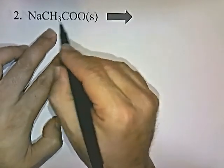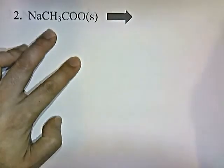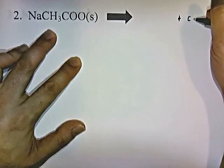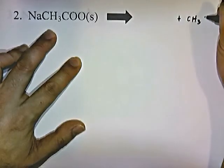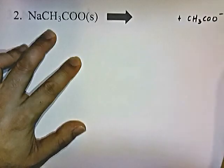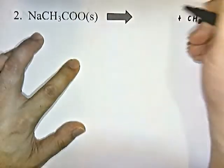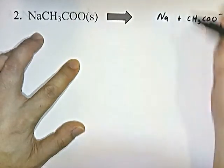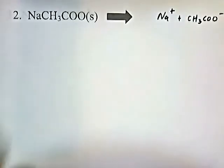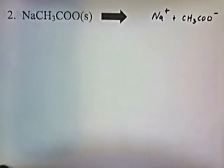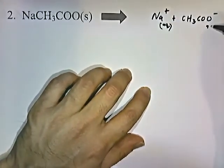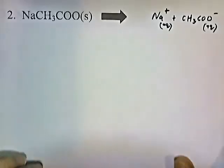CH3COO — you should recognize that as acetate, a polyatomic ion. You should have memorized it as a negative 1 charge. NA is sodium, a group 1 element, so it'll have a plus 1 charge. And we're done. I'll write AQ next to it to indicate that it's dissolved in water.